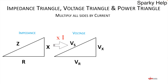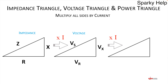Now we multiply each side by I again and get another identical right-angled triangle — this is the power triangle. I times R: R is the bit that does all the work, the bit that uses power, so this gives watts along the horizontal. I times VS gives VA — apparent power — if the circuit has a power factor. And I times VX gives VAR — the volt amps reactive power.